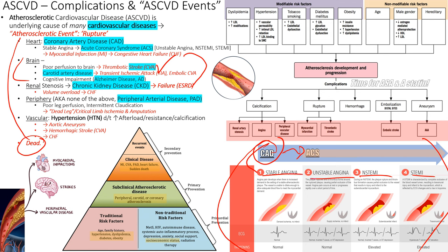After an MI, if the coronary vessel is opened within 90 minutes in the cardiac cath lab, there's a good chance of full recovery. If not, CHF can develop. In the brain, a thrombotic stroke can involve small brain vessels or large vessels in the neck — carotid artery disease — which can send atheroemboli to the brain.